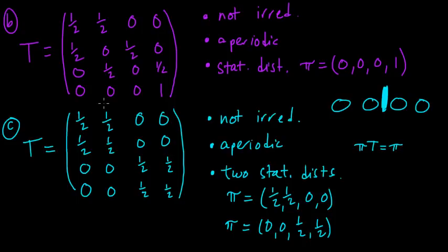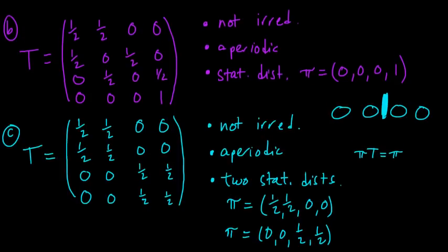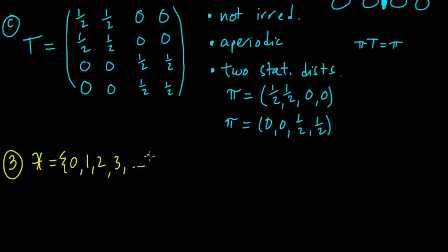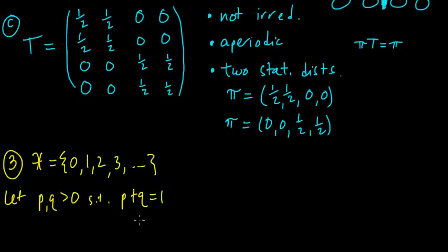Those were three simple finite examples to illustrate these properties. Now we'll take a look at a more interesting example — Example 3 — which will be more interesting because we're going to take an infinite set of states. Our set of states is going to be all the non-negative integers. We will consider an asymmetric random walk on this set with a partially reflecting boundary. We'll take some numbers p and q that are positive such that they sum to one, and we will assume that p is strictly greater than q — so like two-thirds, one-third, something like that.